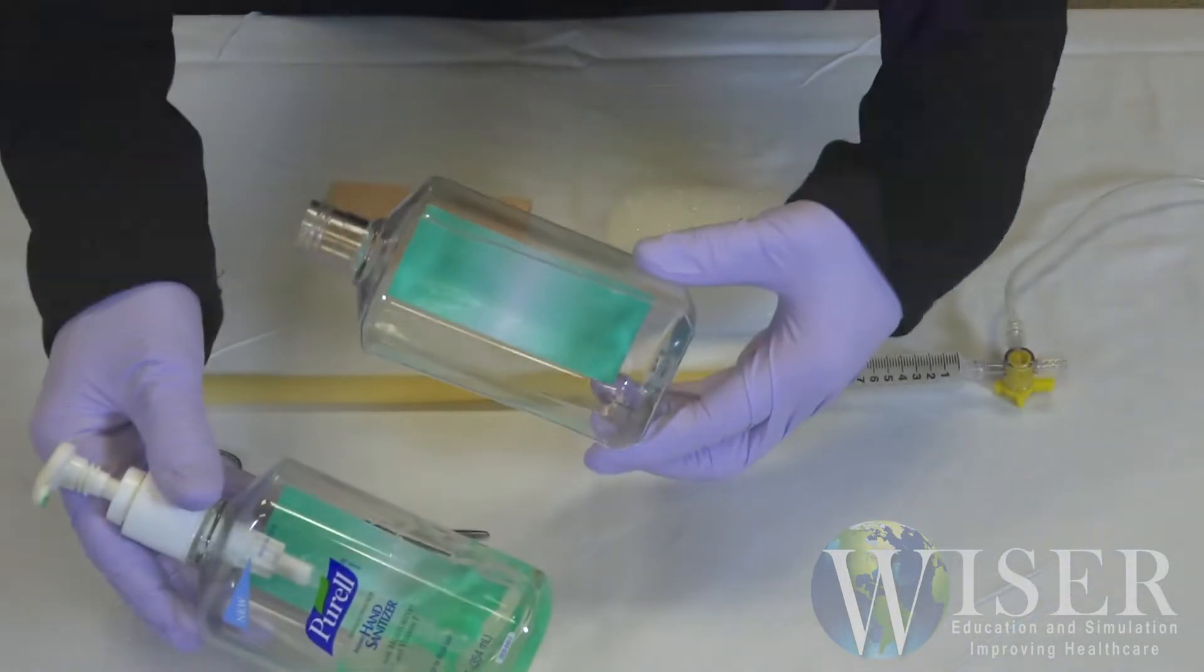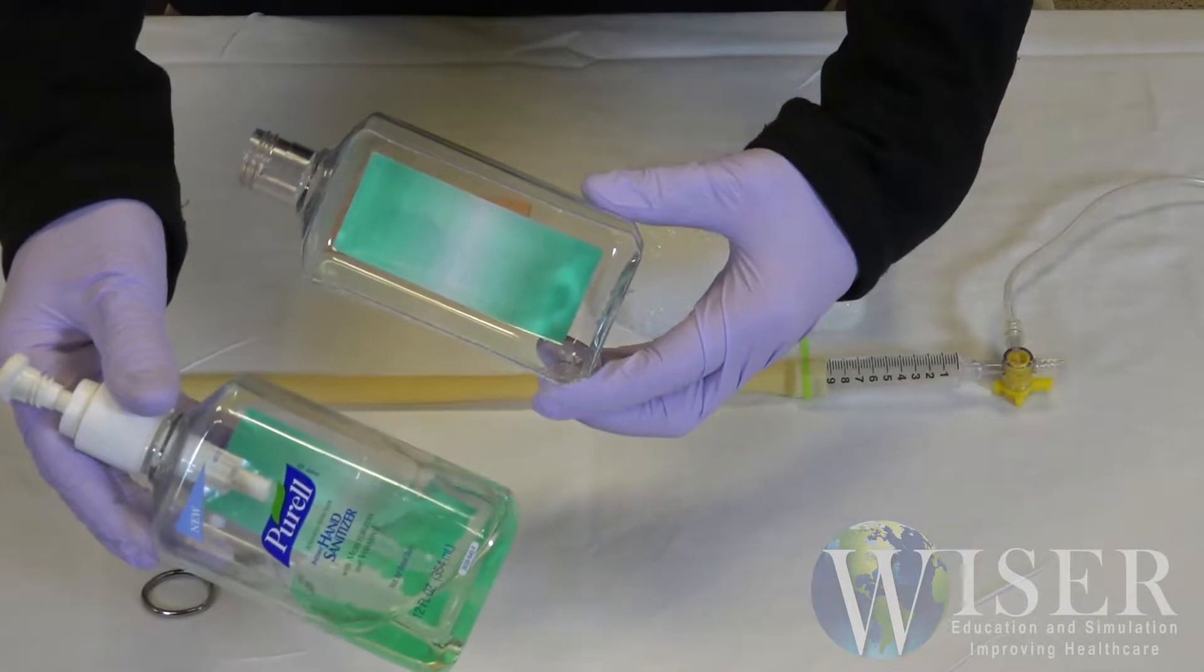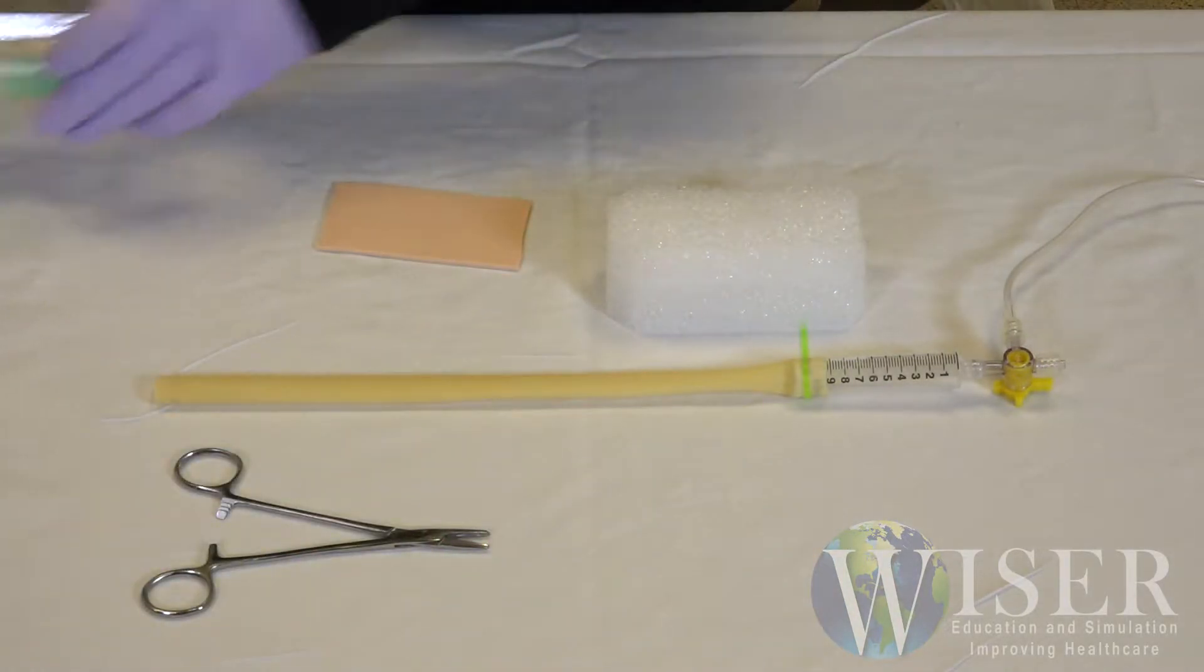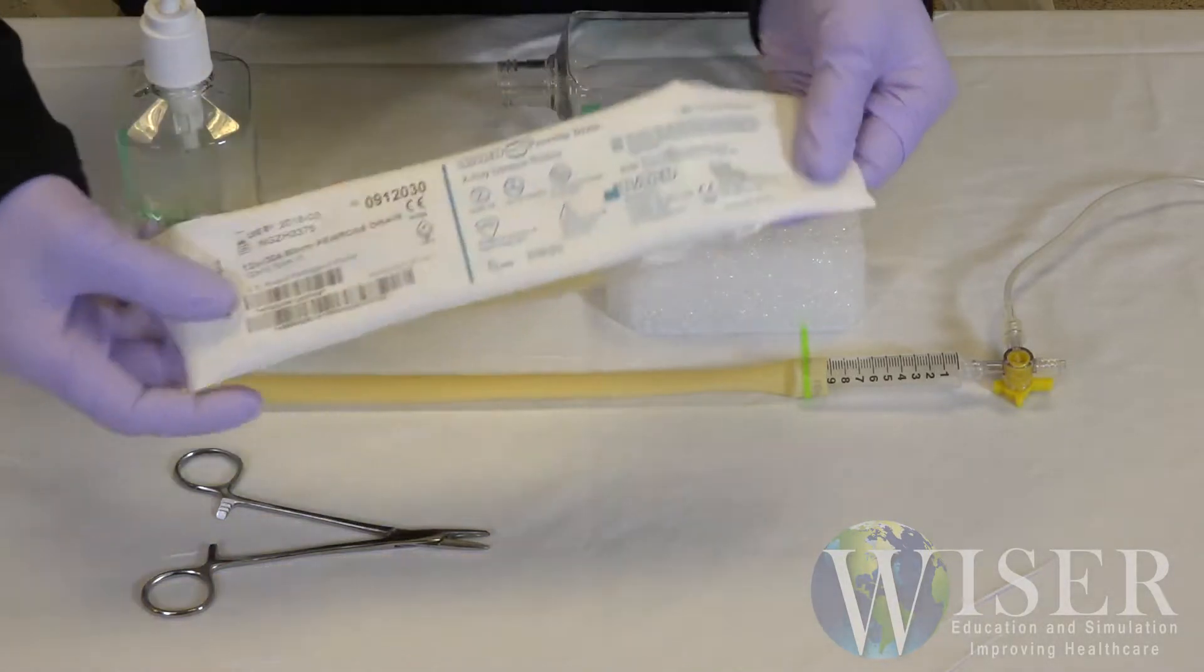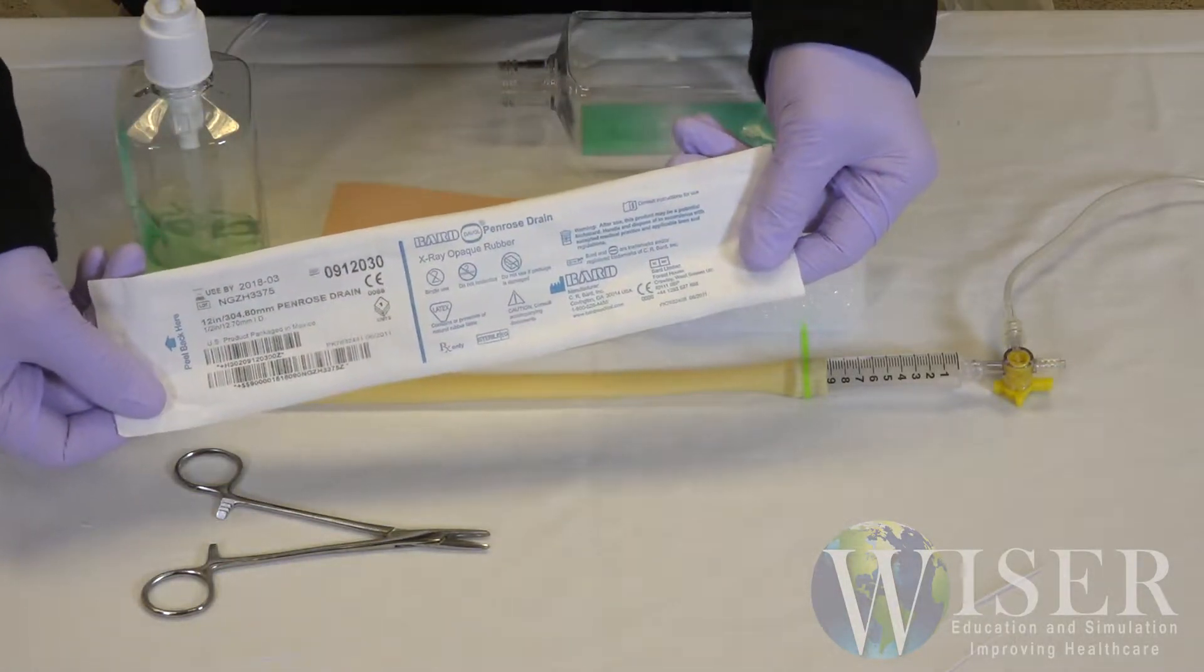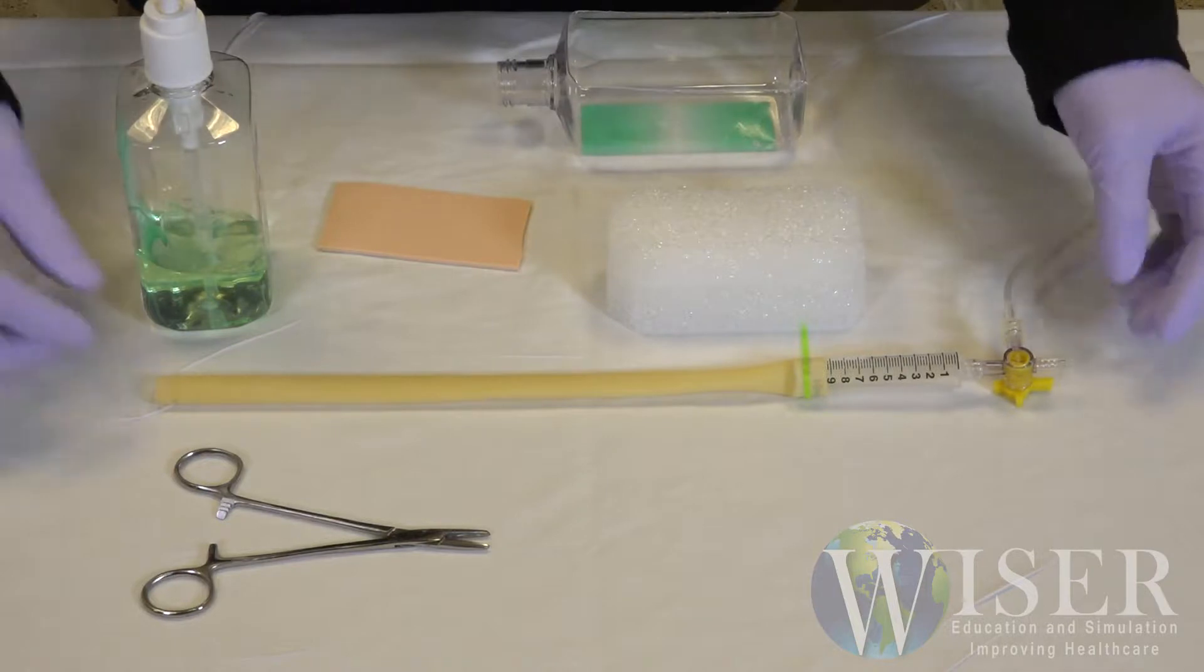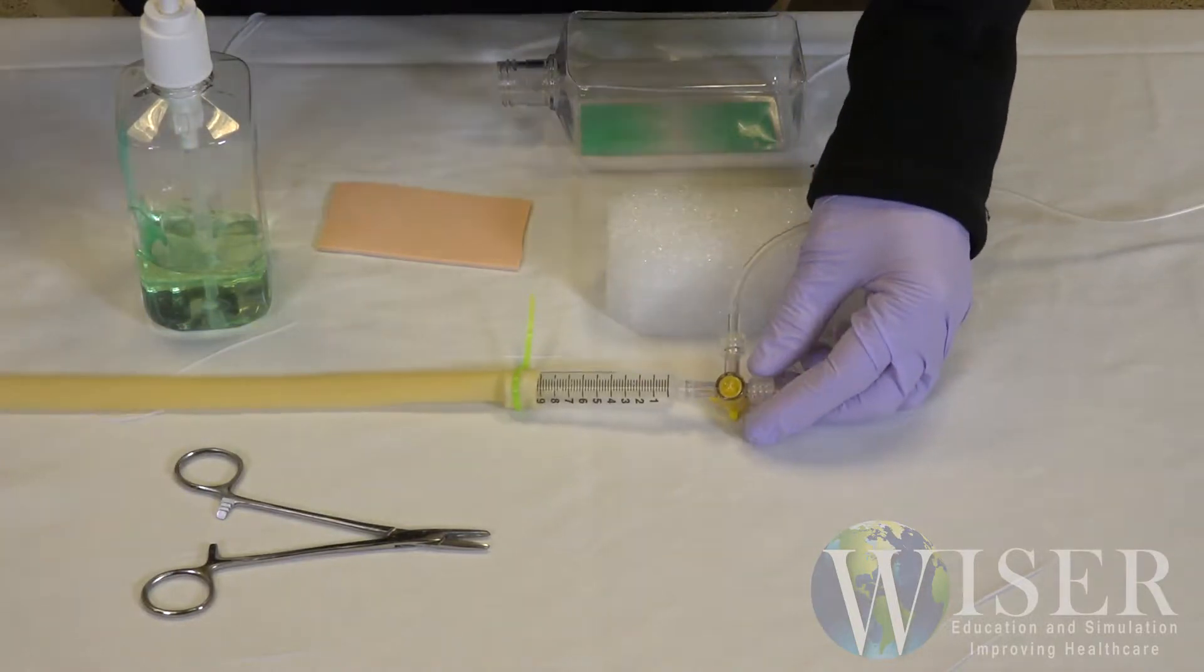This affords students deliberate practice with this technique used in many procedures, such as central venous catheter placement. It consists of a piece of Penrose drain filled with fluid and suspended in foam. This represents a blood vessel.